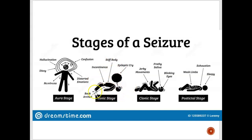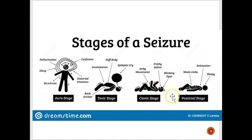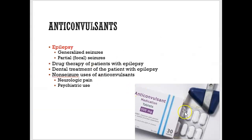After the aura stage, there's the tonic stage, where your body becomes stiff and rigid — you could pass urine and your back usually arcs. Then there's the clonic stage, which is what you typically see in movies, where there are jerky movements and the body is shaking. Once the seizure is done, the body goes through the postictal stage, where you're exhausted and tired from the intense physical activity.